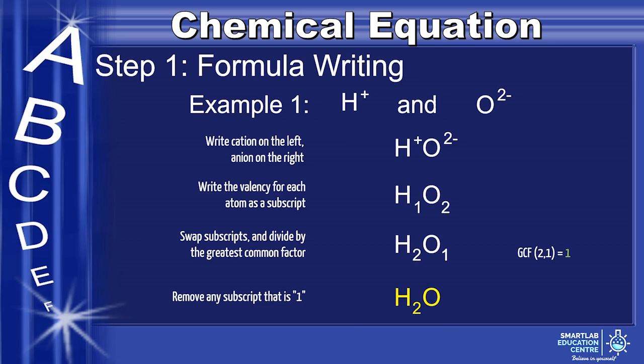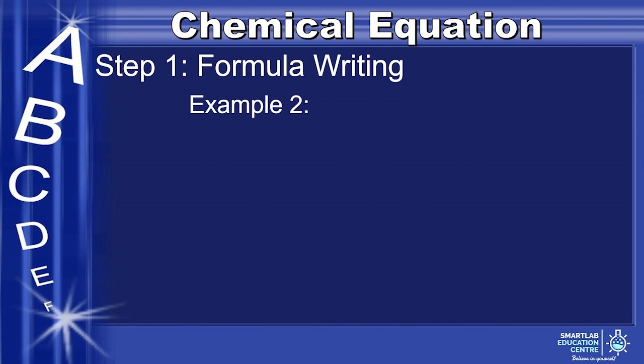Isn't it simple? Let's do it one more time. Example 2, silicon cation and oxide anion. First, we write the cation on the left, anion on the right. Next, we write the valency for each atom as a subscript.